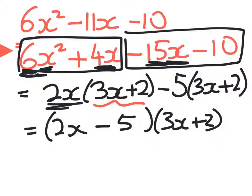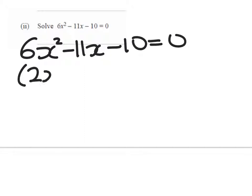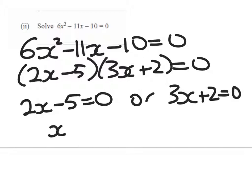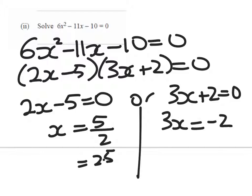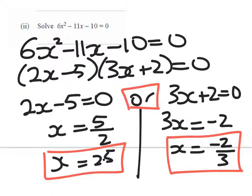And in the next part of the question, we're going to have to use that to solve an equation. So we're solving 6x squared minus 11x minus 10 equals 0. We've already factorized. So it's 2x minus 5 times 3x plus 2 equals 0. So either 2x minus 5 equals 0 or 3x plus 2 equals 0. So x is equal to 5 over 2, which is 2.5. Or 3x is equal to negative 2, x is equal to negative 2 thirds. So that's my answer.